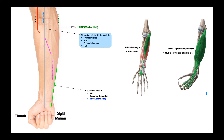Palmaris longus is really just going to be involved in wrist flexion. Flexor digitorum superficialis is involved in the flexion of all four digits — digits two through five, excluding the thumb — and it does so at the metacarpophalangeal and proximal interphalangeal joints. These are the only four muscles innervated by motor branches directly coming off the median nerve.